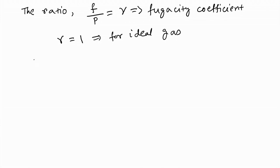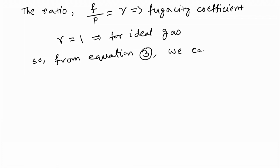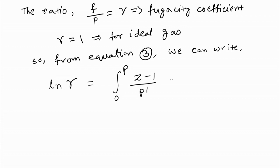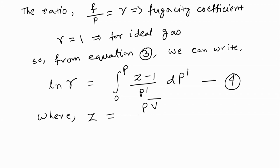From equation 3 we can write ln(γ) as the integral from 0 to P of (z − 1)/P' dP'. This is equation 4, where z equals PV̄/RT is the compressibility factor.